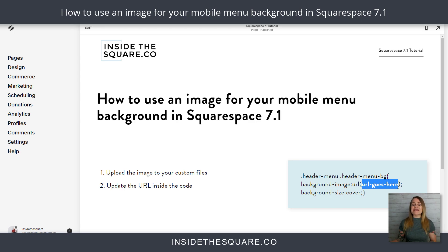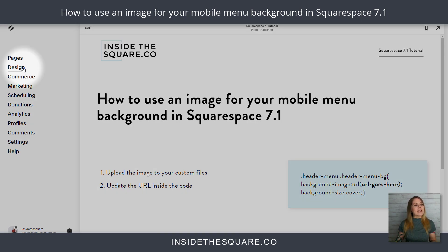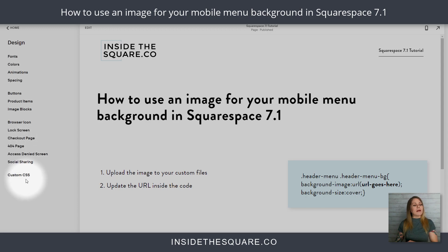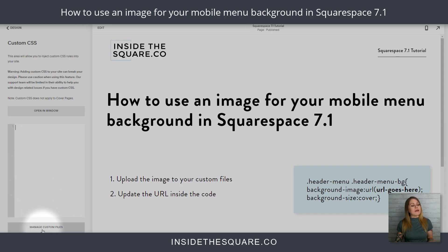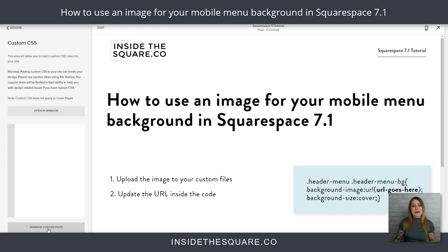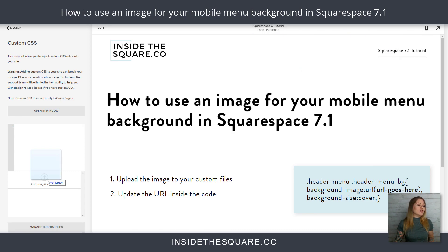I'll walk you through it step by step. First things first, let's head to Design and scroll down to Custom CSS. Down here you'll notice we have a Manage Custom Files button — that is where we're going to upload the image we want to use. Select Manage Custom Files, and you can just drag and drop it from your computer right there and it'll upload.